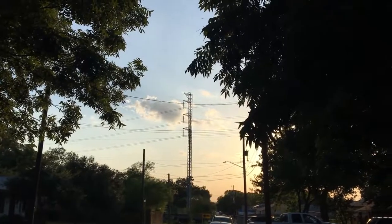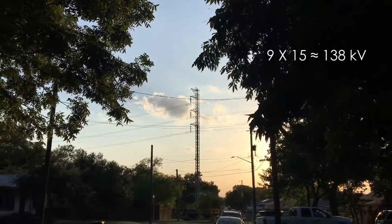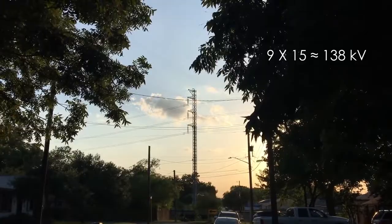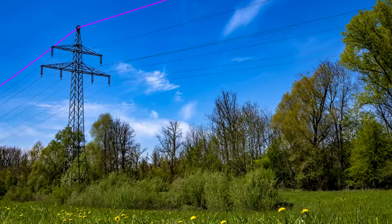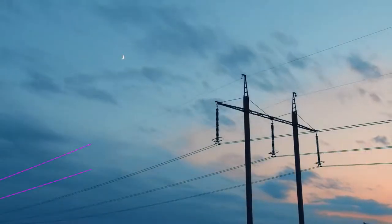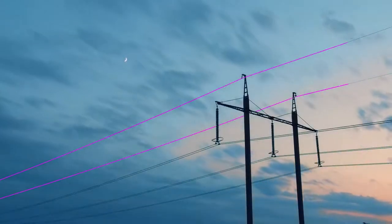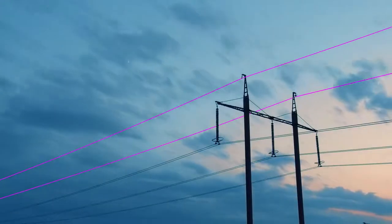For example, this line near my house has 9 discs on each insulator, and I know it's a 138 kilovolt line. You'll also often see smaller conductors running along the top of transmission lines. These static or shield wires aren't carrying any current. They're there to protect the main conductors against lightning strikes.